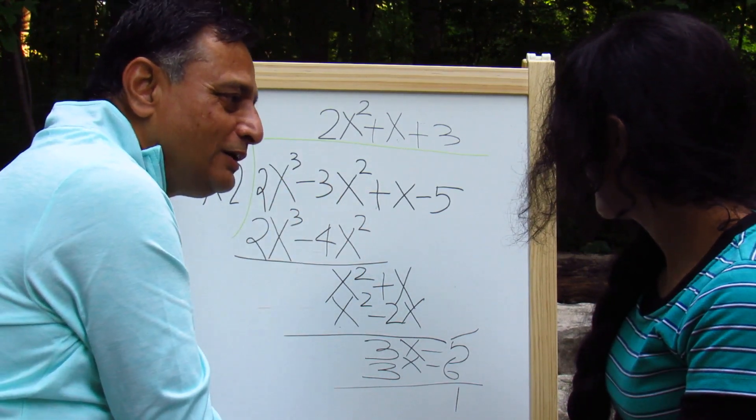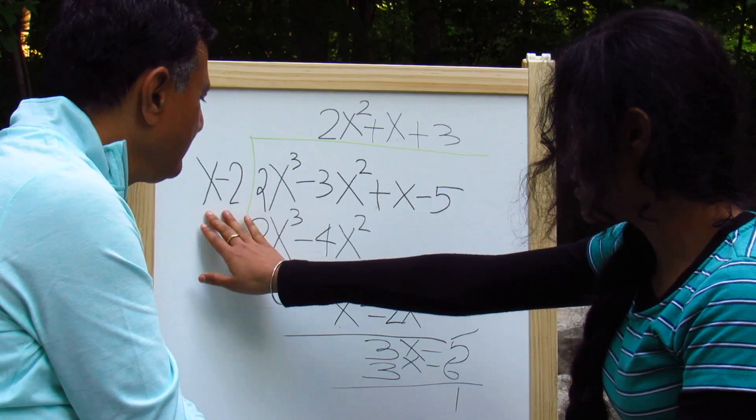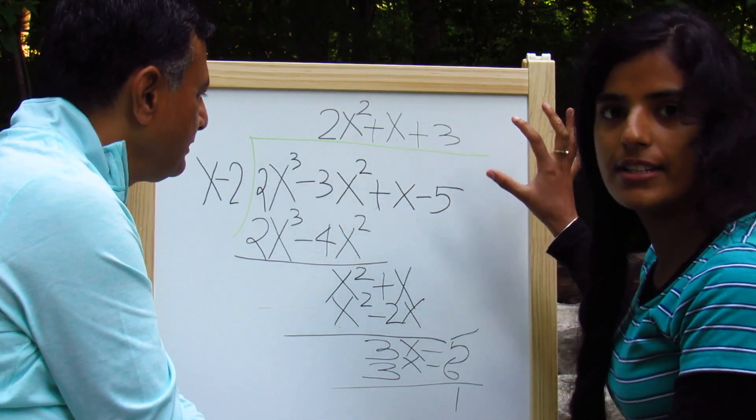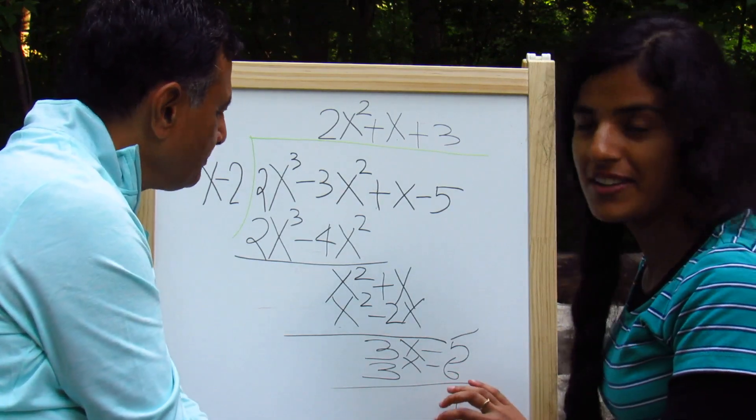So that is how we do long division. So in this case, this would be your divisor, x minus 2. This term would be our dividend. This would be our quotient. And this is remainder 1.